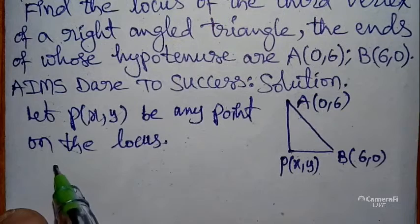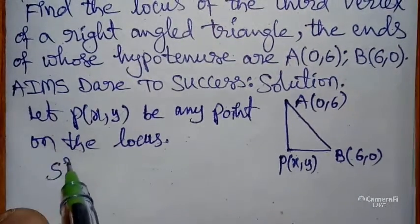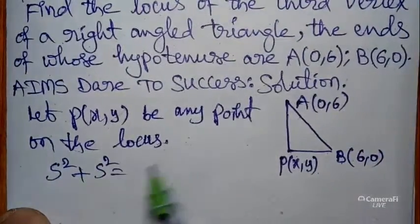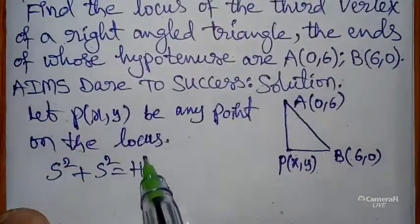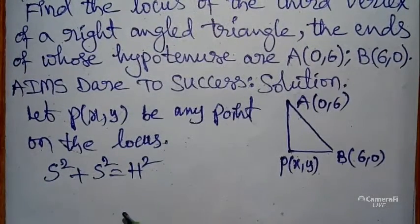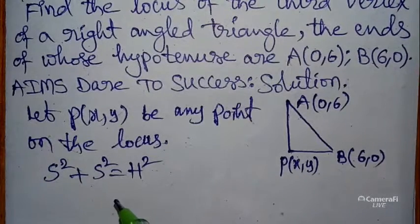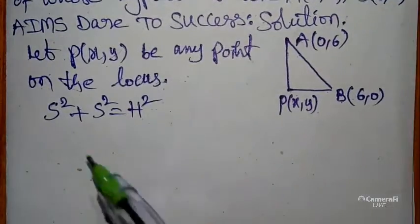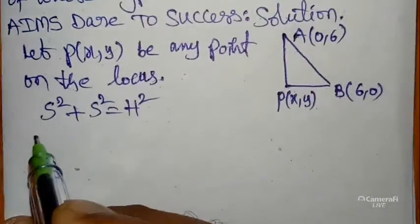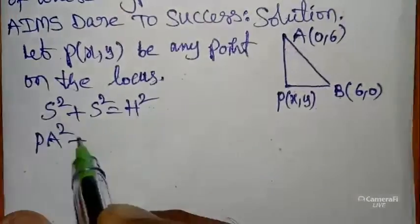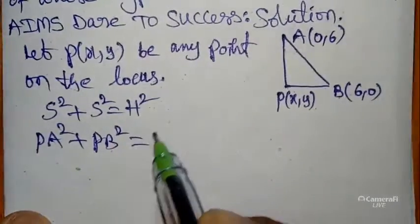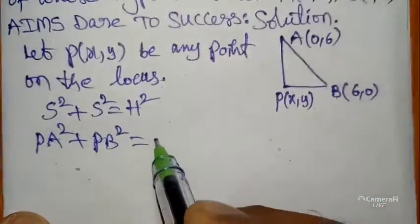Since it is a right angle triangle, we use the Pythagorean theorem from 10th class: side² + side² = hypotenuse². So PA² + PB² = AB².